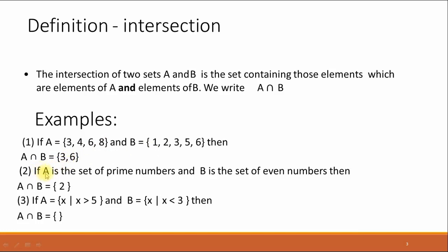Another example: if A is a set of prime numbers and B is a set of even numbers, then A intersection B contains only one element, 2, because 2 is a prime number and also an even number. Another example: if A is a set of all elements X such that X is greater than 5, and B is another set of all elements X such that X is less than 3, then there is no common element in these two sets, so the intersection of these two sets will be empty.